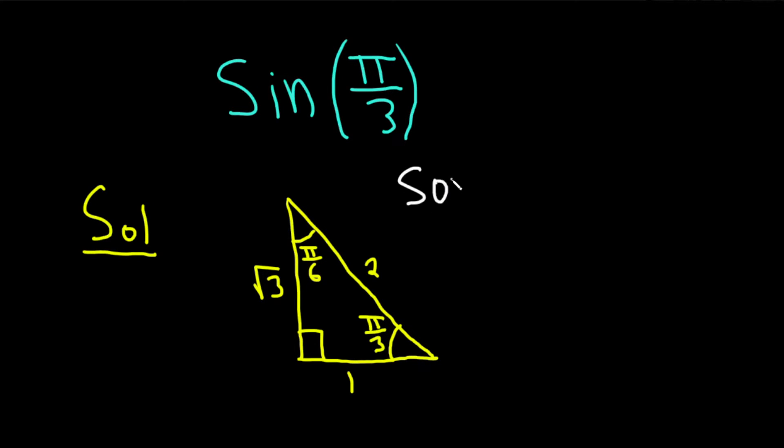It's SOH CAH TOA. This means that sine is equal to opposite over hypotenuse, cosine is equal to adjacent over hypotenuse, and tangent is opposite over adjacent.